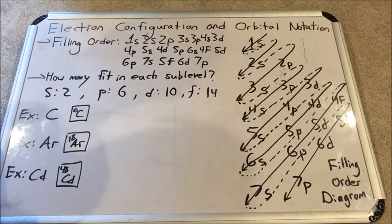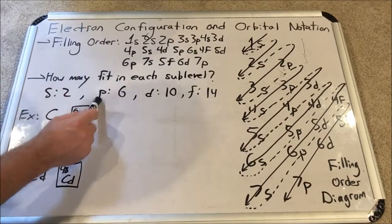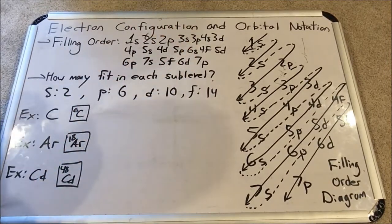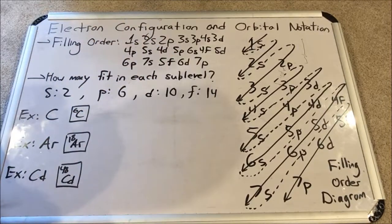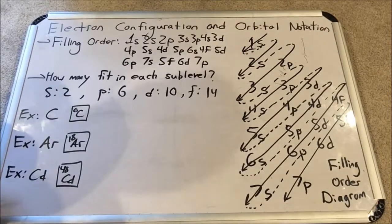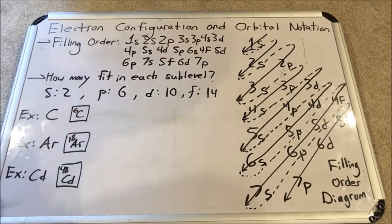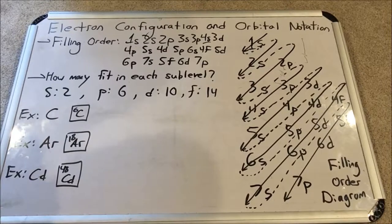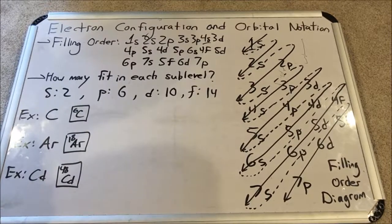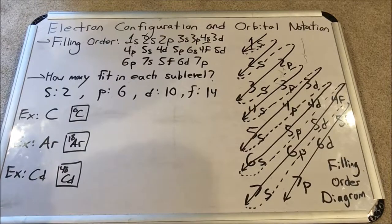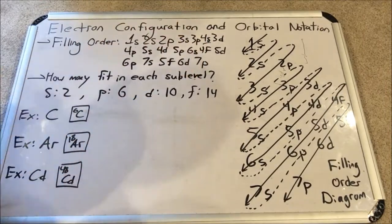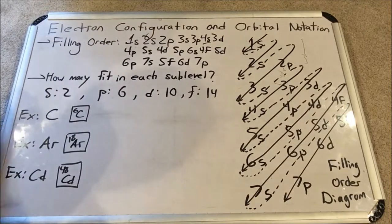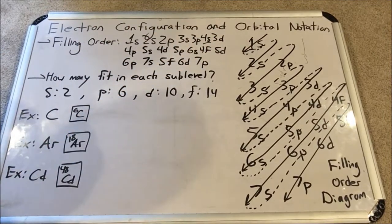We will go to principal energy level 3, which has an S sublevel, a P sublevel, and a D sublevel. After 2P, we will fill up the S sublevel of principal energy level 3. Then we will go to 3P and fill that up. Now look what happens. This is the first anomaly: 4S. Why would I not fill 3D next? Well, it turns out 4S is a lower total energy level for those electrons, so they will fill 4S first. They will postpone filling that sublevel.